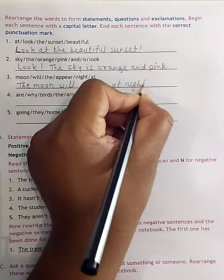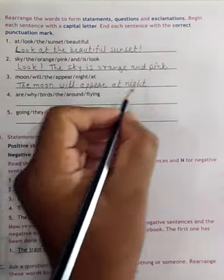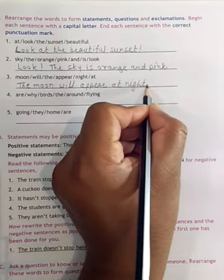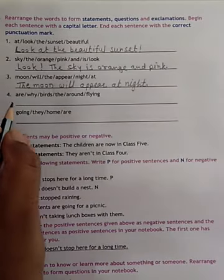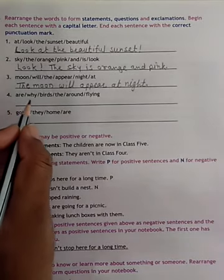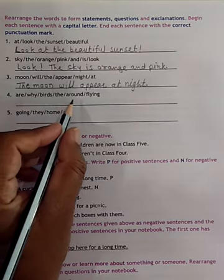Yes, we have got the moon will appear at night. This is the information, this is called a statement. At the end of the statement, we have given full stop. Then next, are why birds the around flying?